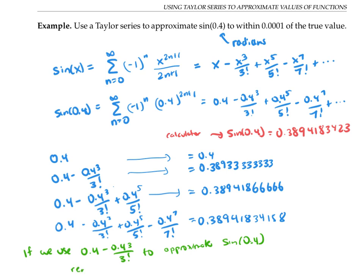Then the remainder should be smaller in absolute value than 0.4 to the 5th over 5 factorial. Now 0.4 to the 5th over 5 factorial is equal to 0.00008533333.